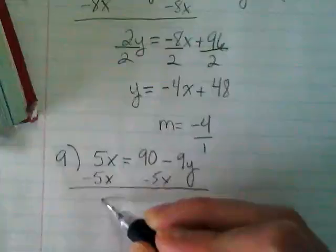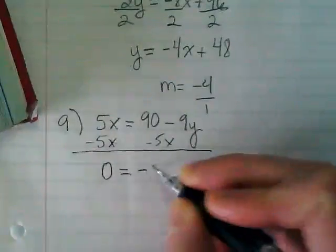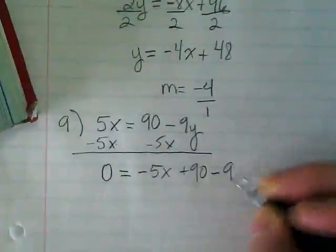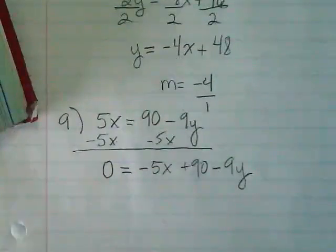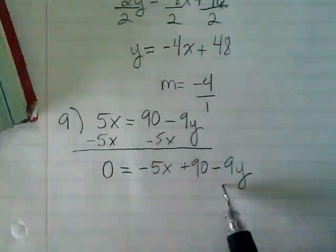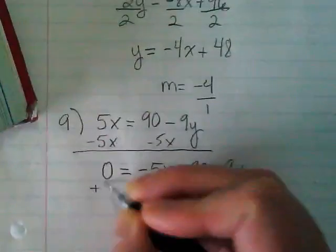5X minus 5X is going to leave me with 0. And everything in this equation right now is on the right side of the equal sign. Negative 5X plus 90 minus 9Y. I want the Y on the left side, don't I? That means it's a negative 9Y, so we're going to... Did I say NY? I'm thinking New York. 9Y. I'm going to add 9Y to both sides.